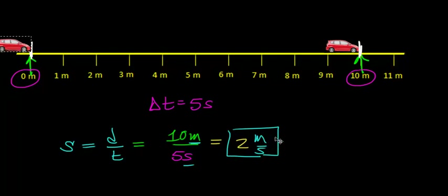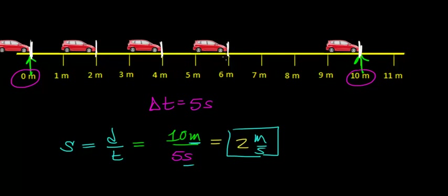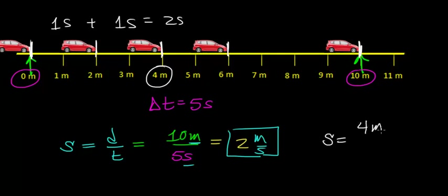One way to think about constant speed: if this car travels at 2 meters per second, then after 1 second it moves 2 meters from its starting point, and every additional second it travels another 2 meters. It doesn't matter what distance interval we use — if we take a 4-meter stretch traveled in 2 seconds, we still calculate 4 ÷ 2 = 2 meters per second.